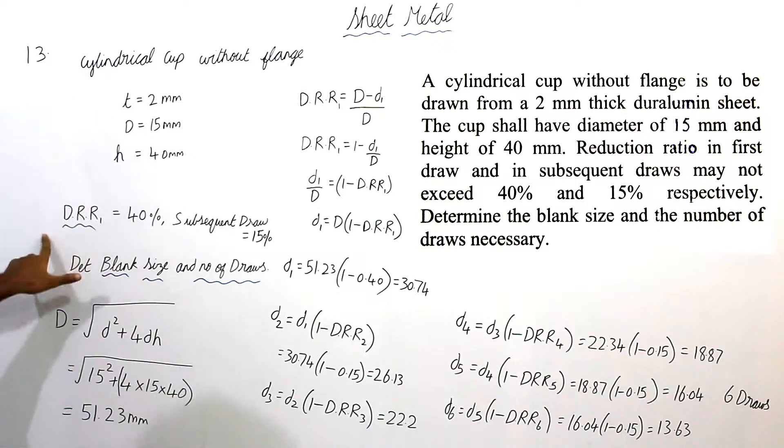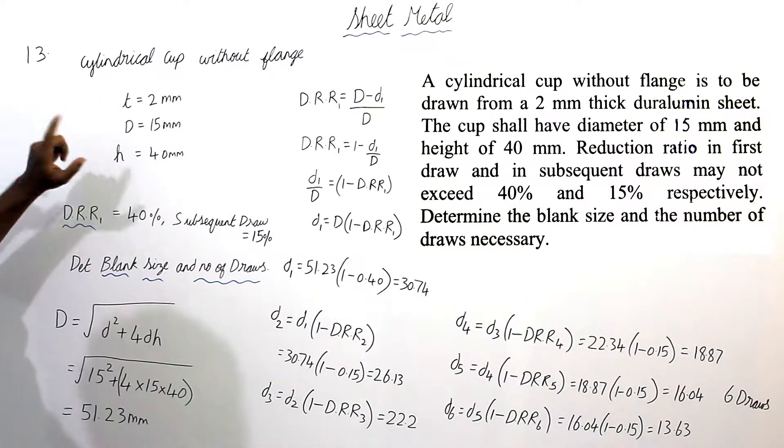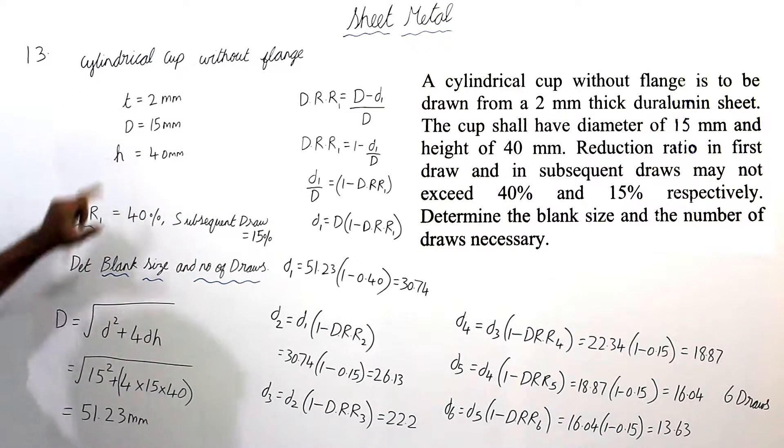These are the given data. They have given a cylindrical cup without a flange of thickness 2 mm, diameter is 15 mm, height is 40 mm.